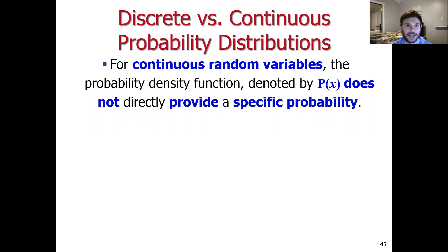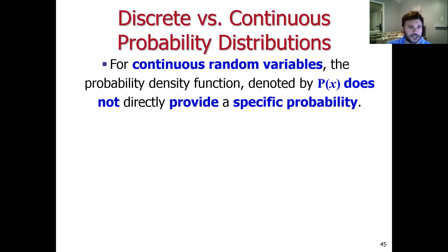For example: what's the probability of exactly two lessons converting into sales? Now, with a continuous distribution, there's a slightly different interpretation. The probability density function does not provide a specific probability of observing event x. In a continuous world, you can think of it like rolling a die.